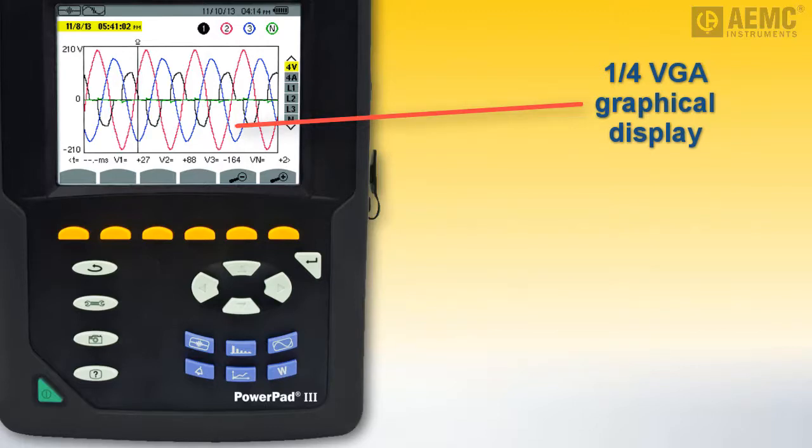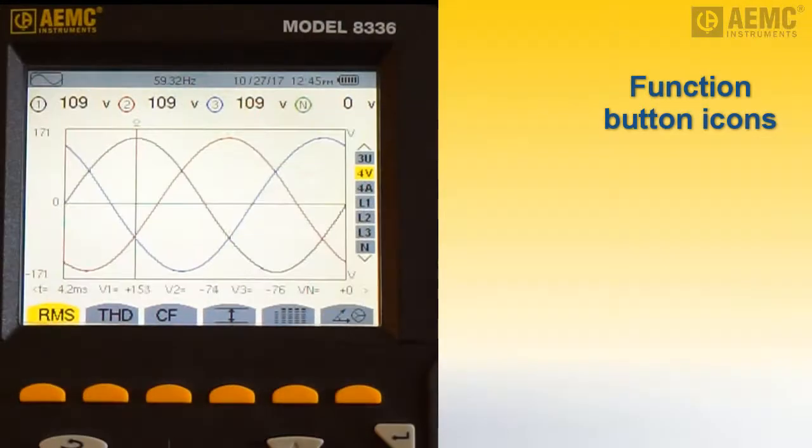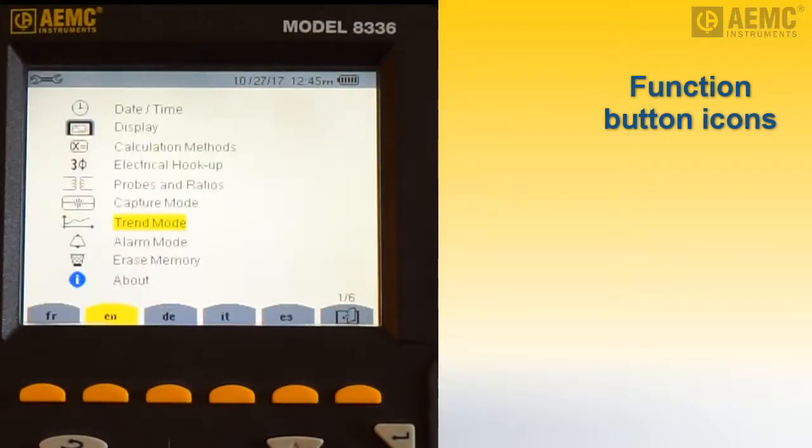At the bottom of the screen is a set of icons that correspond with the yellow function buttons immediately below them. Each icon represents the function performed by its associated button. Icons are context-sensitive. Different screens display different sets of icons. The currently selected icon appears in yellow. Unselected icons are gray.